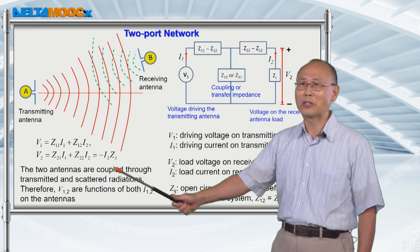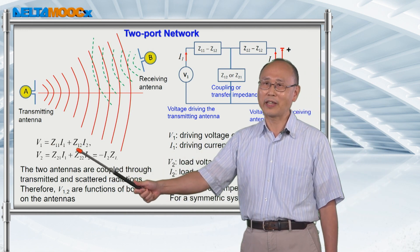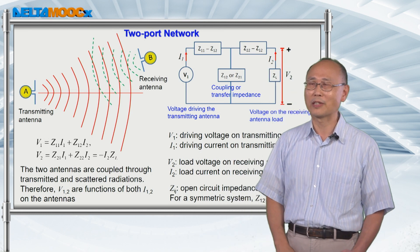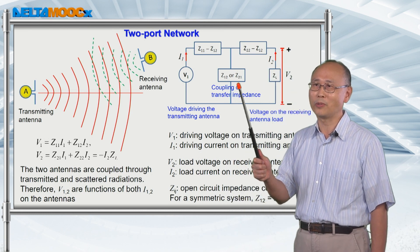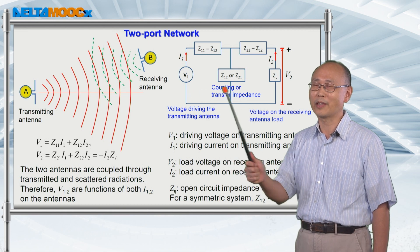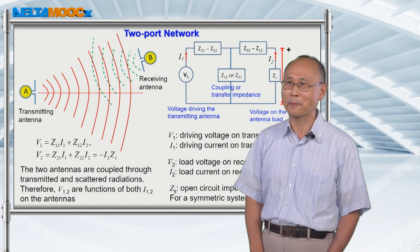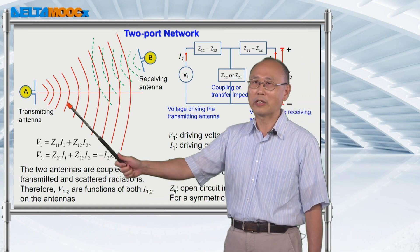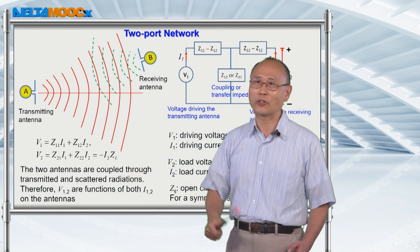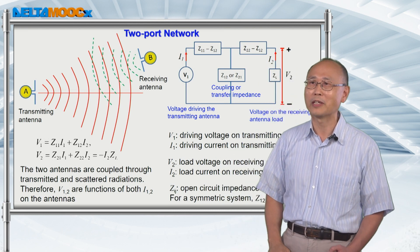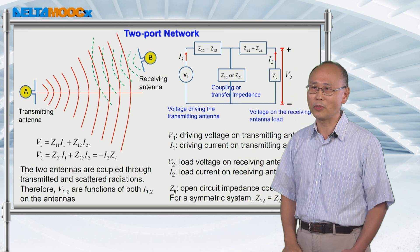The relationship between the current and voltage is connected through those impedances. In particular, there's an impedance Z12 or Z21 between these two antennas which couples the energy between them. And in general, if there's no physical setup that would destroy the symmetry, this Z12 is going to be equal to Z21.